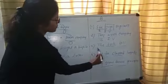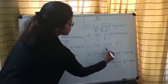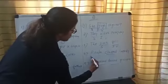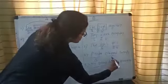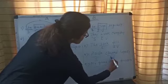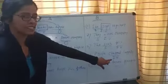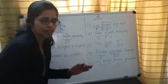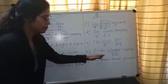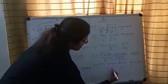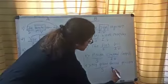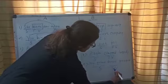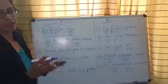Move to the third one: the book fell. 'Book' is the subject, 'fell' is the verb, and this verb is an intransitive verb. Similarly, 'Puja' is the subject, 'clapped' is the verb, and this verb is intransitive because it doesn't have any object to receive the action performed by Puja. Similarly, 'my friend' is the subject, 'danced' is the verb, and this verb is again an example of an intransitive verb. I hope this concept is clear.